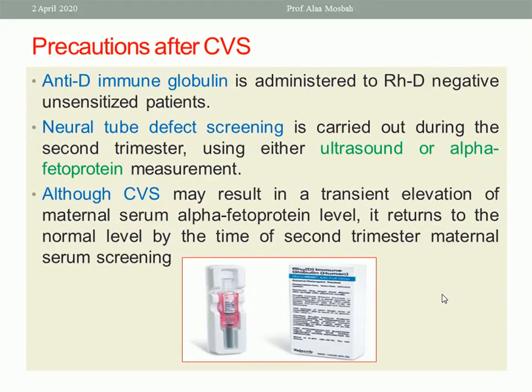Precautions after chorionic villus sampling: Rh-negative patients should receive anti-D immunoglobulin injection to prevent Rh sensitization — this applies to cases of Rh-negative wife and Rh-positive husband. Neural tube defect screening is carried out in the second trimester using AFP or ultrasound. Although CVS may cause a transient elevation of maternal serum alpha-fetoprotein, it returns to normal by the time of second trimester maternal serum screening.